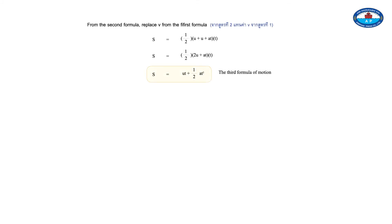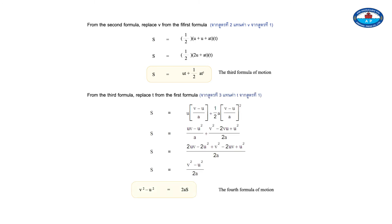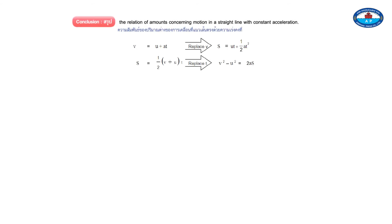From the second formula, replace v from the first formula. From the third formula, replace t from the first formula. Conclusion: The relation of amounts concerning motion in a straight line with constant acceleration.